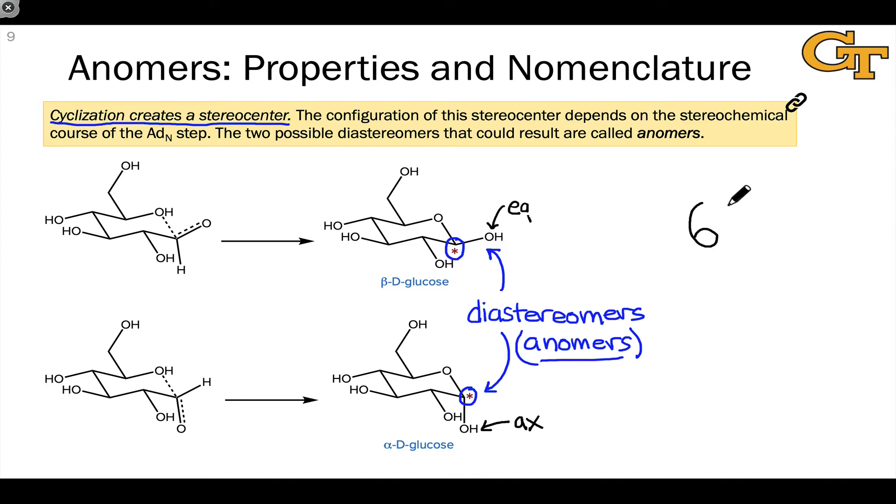In the case of D-glucose, the ratio is 64% beta anomer and 36% alpha anomer. This is exactly what we would predict qualitatively considering the stability of axial versus equatorial substituents in a cyclohexane ring, which is highly analogous to this glucopyranose.